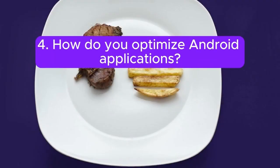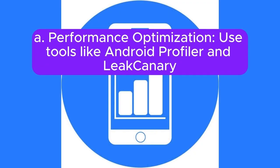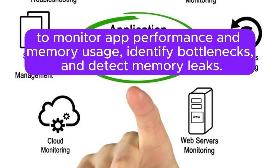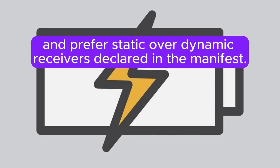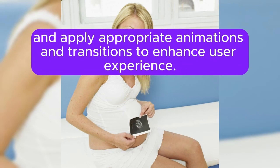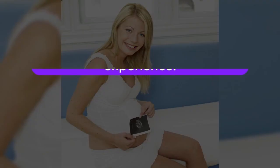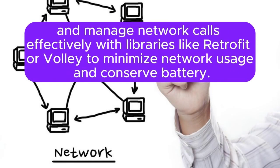Question 4: How do you optimize Android applications? Optimization involves several strategies. For performance, use tools like Android Profiler and LeakCanary to monitor app performance and memory usage, identify bottlenecks, and detect memory leaks. For battery life, reduce background services, use AlarmManager to batch database updates, and prefer static over dynamic receivers declared in the manifest. For UI/UX, design responsive layouts with ConstraintLayout, use vector assets, and apply appropriate animations. For network, compress data, use caching mechanisms, and manage network calls with libraries like Retrofit or Volley.